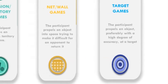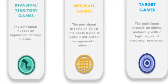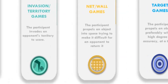The second category is net/wall games: game forms in which players send an object — either a ball or a shuttle — over a net or against a wall so that it lands in an area that an opponent is trying to defend. The aim is to make it difficult for the opponent to return the object or force them into a mistake.